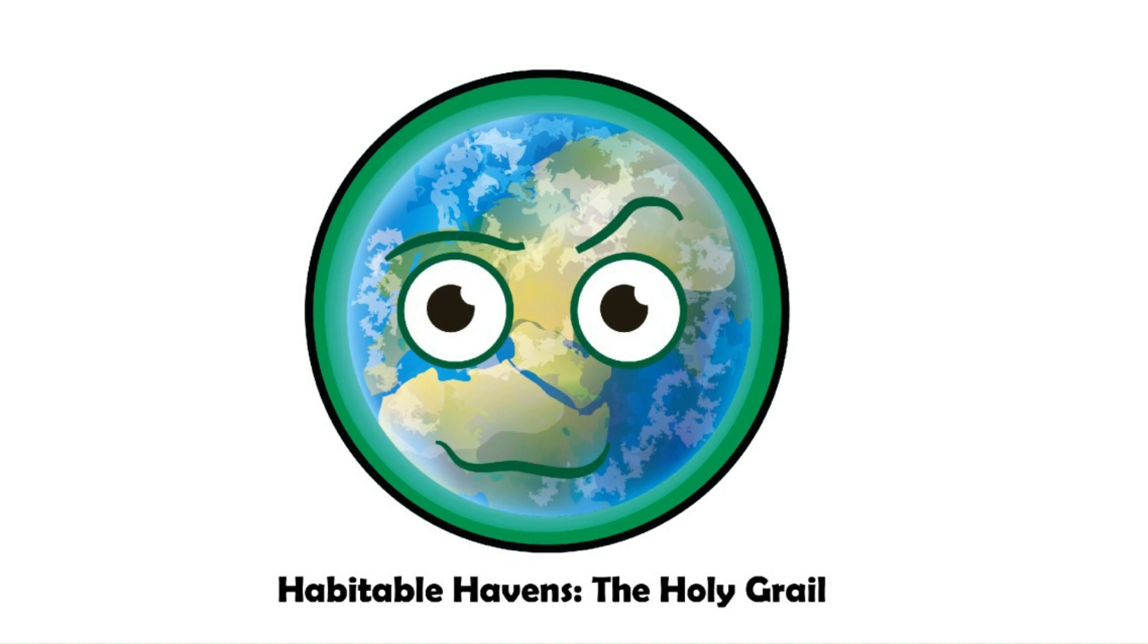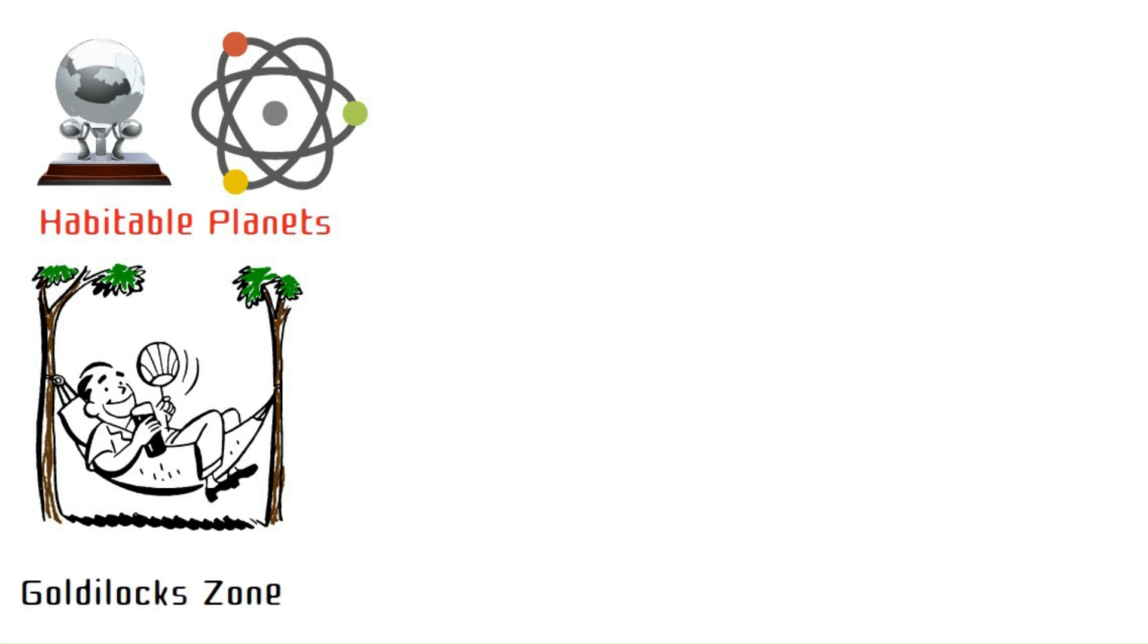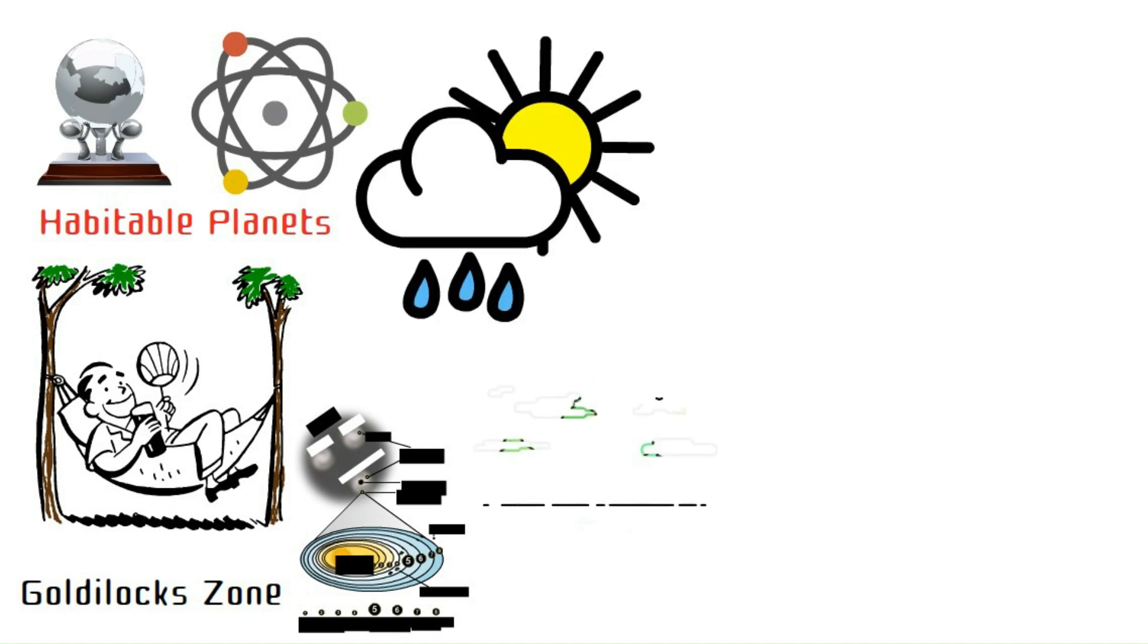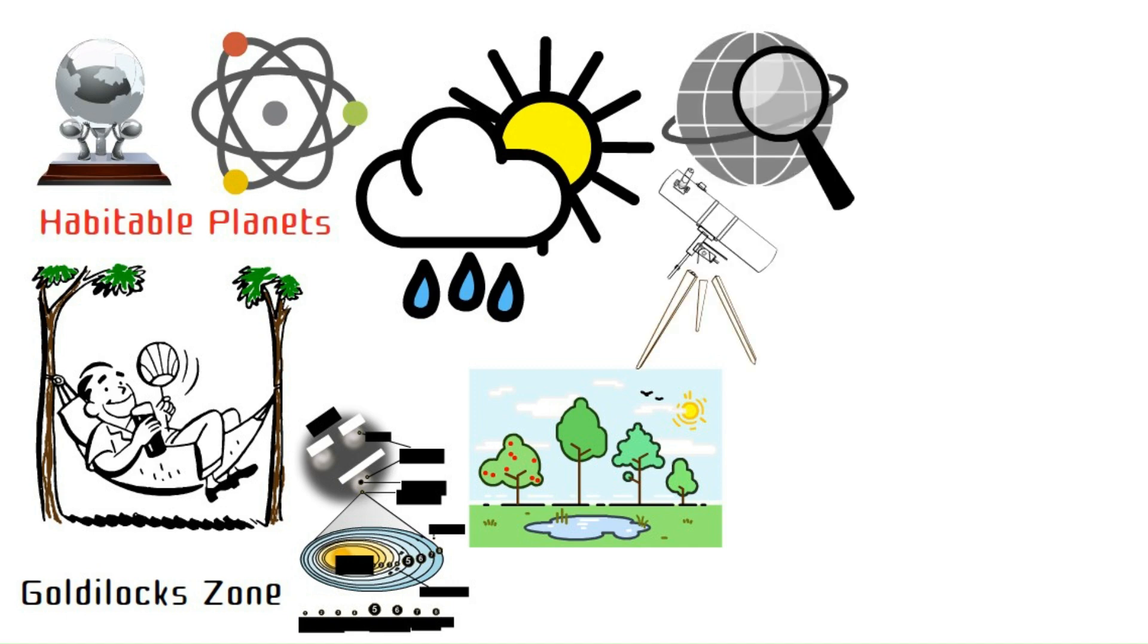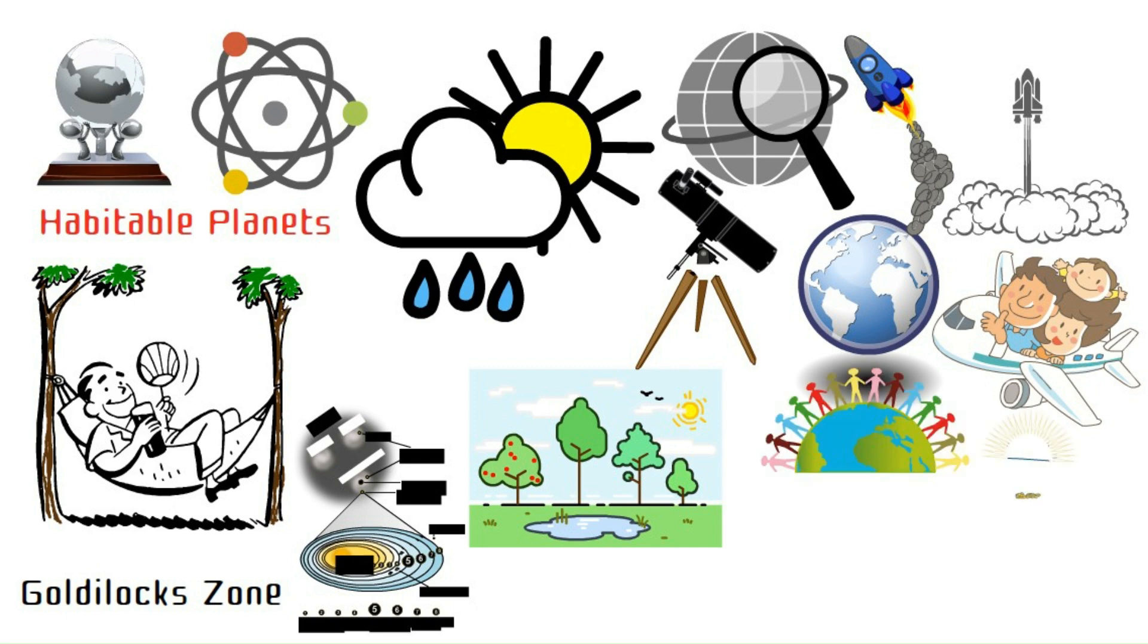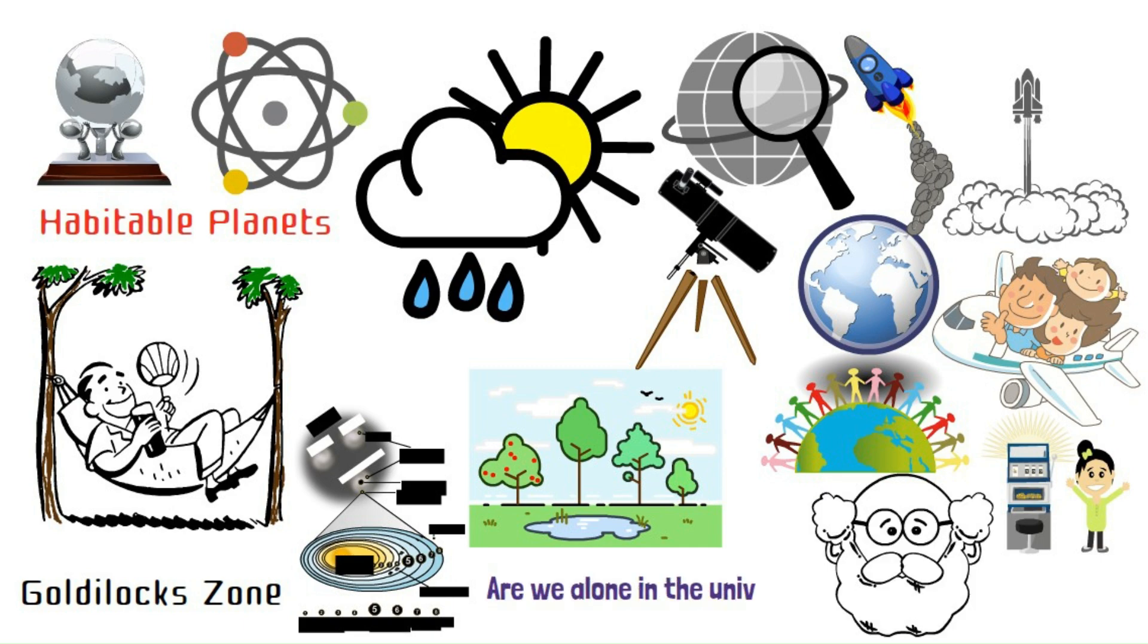Habitable Havens. The Holy Grail. Now let's talk about the Holy Grail of planetary science, habitable planets. These are worlds that could potentially support life as we know it. They need to be in the Goldilocks zone of their star system, not too hot and not too cold, and have a suitable atmosphere and liquid water. The search for habitable planets is a major focus of modern astronomy. We're constantly scanning the cosmos for exoplanets that might harbor the conditions necessary for life. Finding a truly habitable planet would be a revolutionary discovery, potentially answering the age-old question, are we alone in the universe?